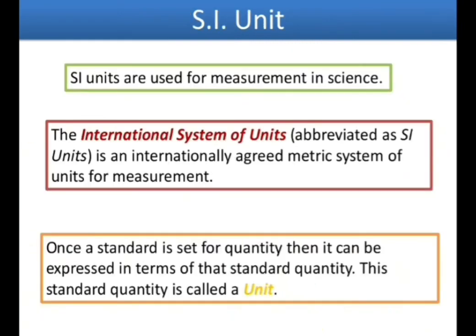In earlier times, people across the world used different systems of units, which always caused confusion and disorder when there was no standard of measurement. For example, if you go to buy a one-fourth inch tap for your home but the shopkeeper gives you a half-inch tap saying it is the correct one, the tap will not fit. So, to reduce confusion in measurement everywhere, we require a standard system of measurement. The international system of units — the SI unit — is an internationally agreed metric system of units for measurement which has existed since the 1960s.